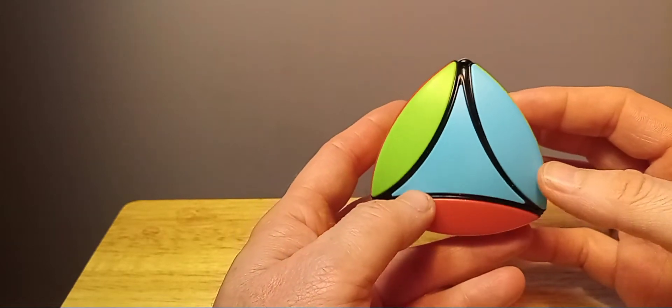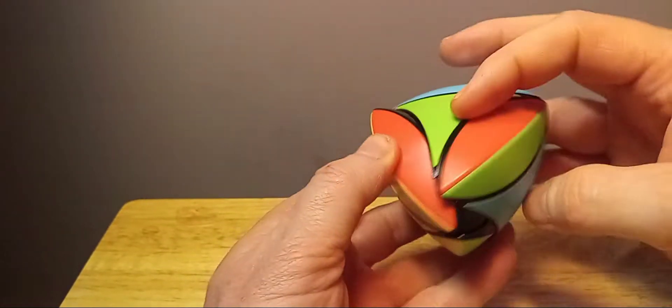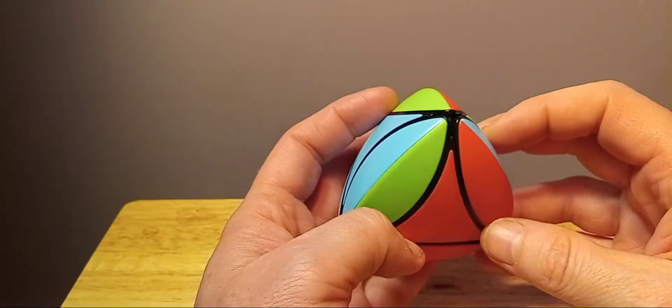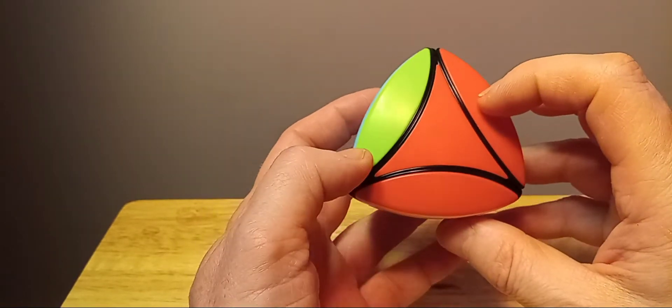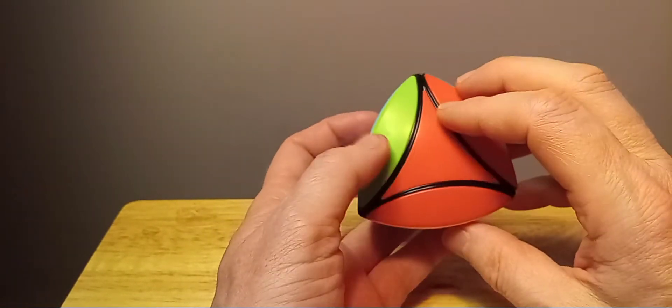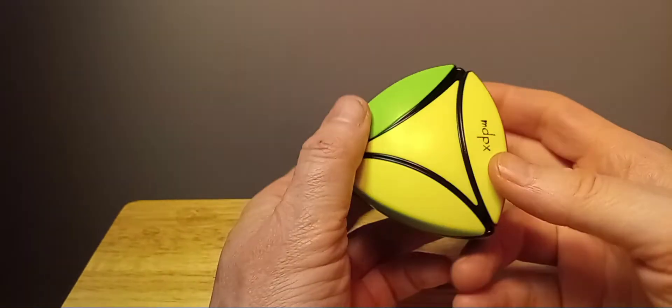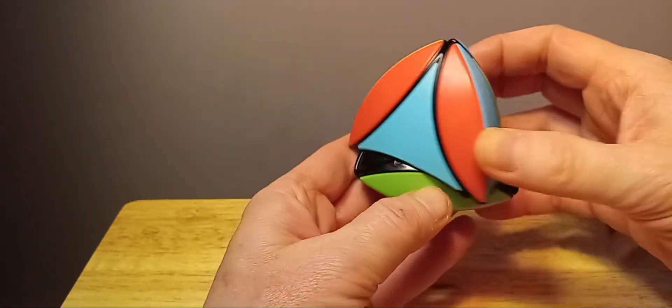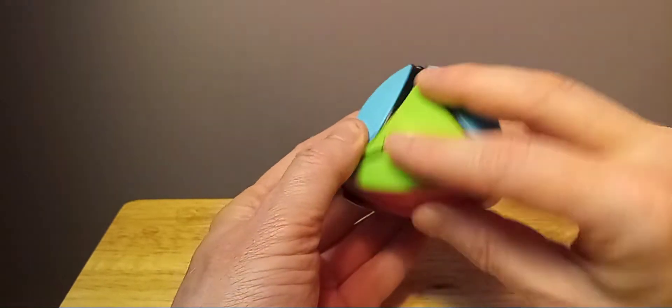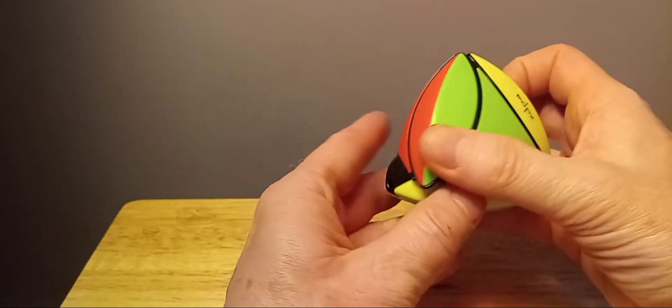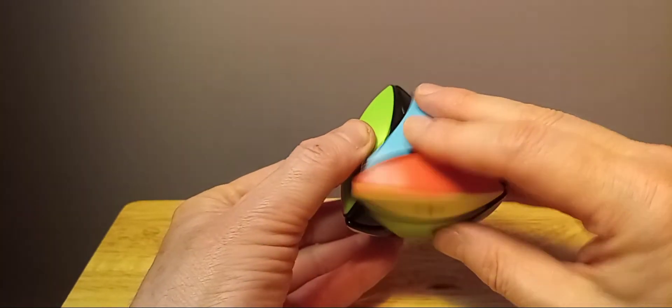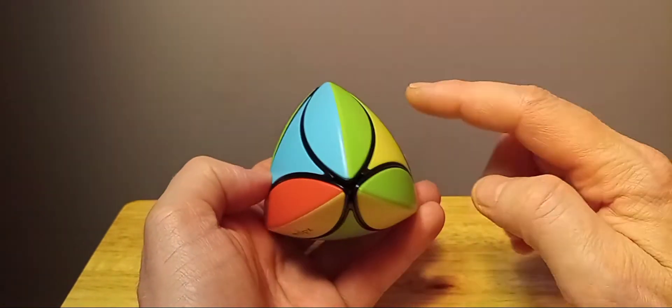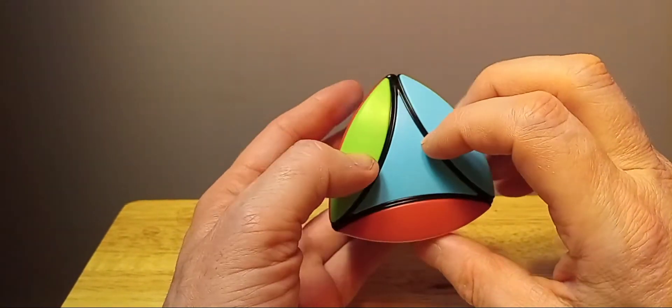Next step is you just turn it. So you have the, you know, whatever color it is. It doesn't matter. And you just do the sune algorithm to try to get one piece in place. So we'll do a right, up, right invert, up, right, up, and then right invert. And notice the green is on the bottom. So we're going to do it one more time because we've got to get this yellow center back down here. So we do the same exact move again.